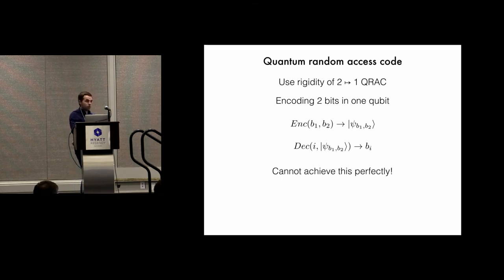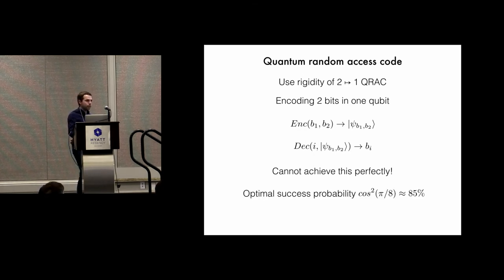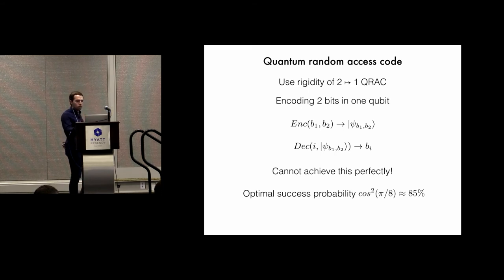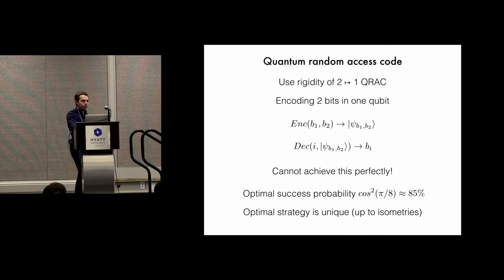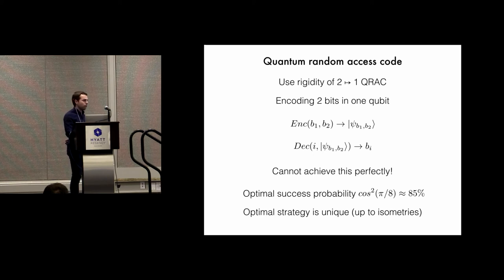You cannot achieve this perfectly — one qubit cannot store more than two classical bits perfectly. However, quantum mechanics allows you to get a higher success probability than classically, which is about 85 percent, or cosine squared of pi over 8, assuming the classical bits were chosen uniformly at random. We showed that this optimal strategy achieving this value is unique up to isometry. We also showed this in a robust sense: even if you're achieving close to 85 percent success probability in your encoding and decoding, you should be close to performing the optimal strategy in your quantum random access code.